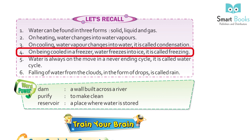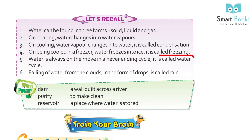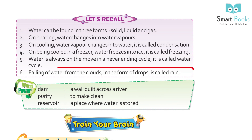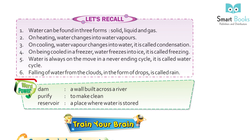4. On being cooled in the freezer, water freezes into ice — it is called freezing. 5. Water is always on the move in a never-ending cycle, called the water cycle. 6. The falling of water from clouds in the form of drops is called rain.